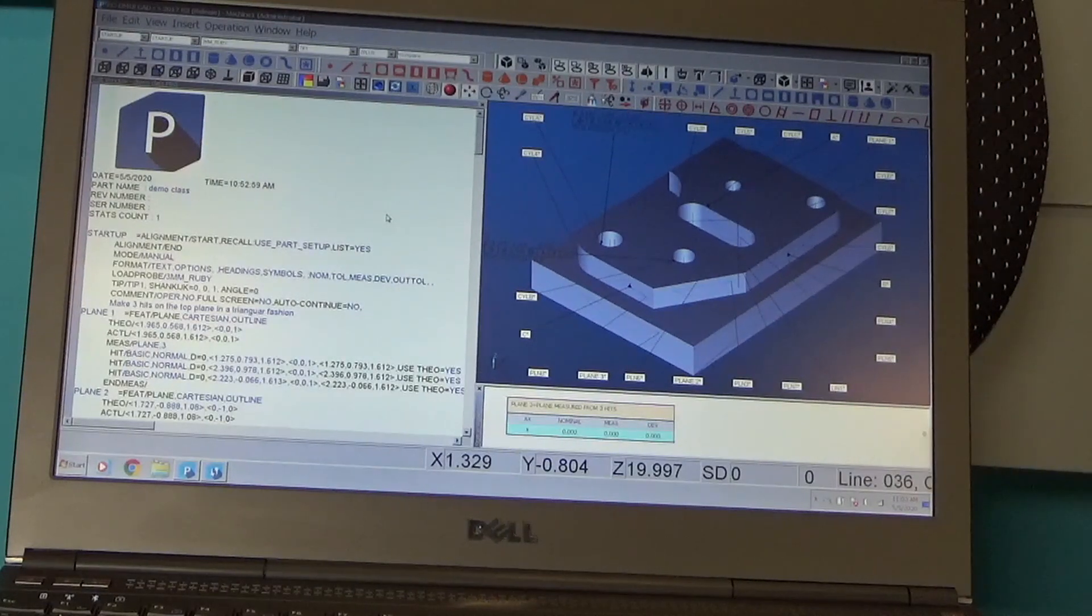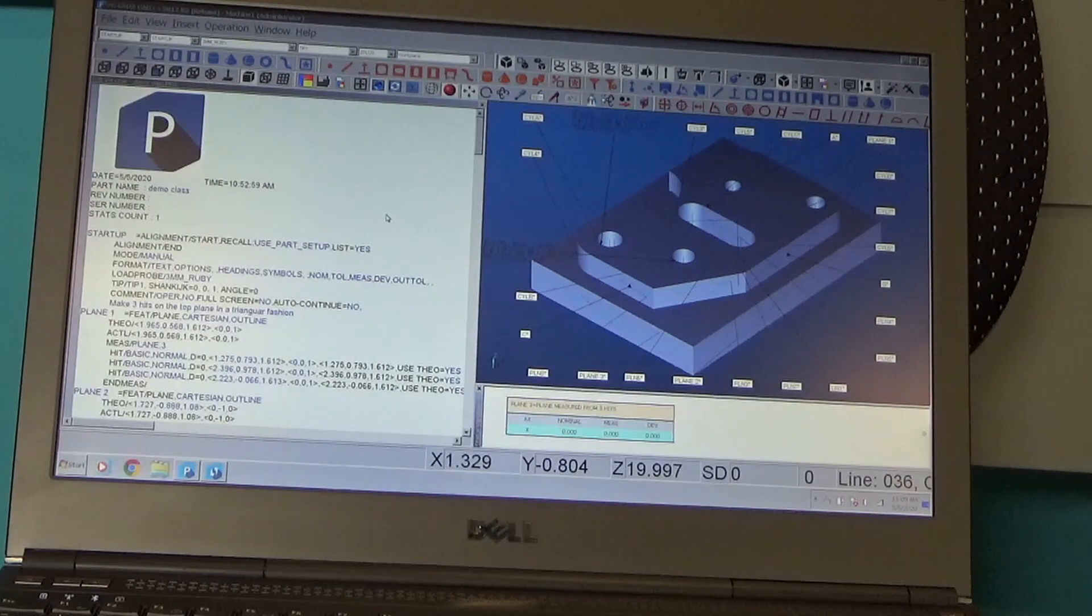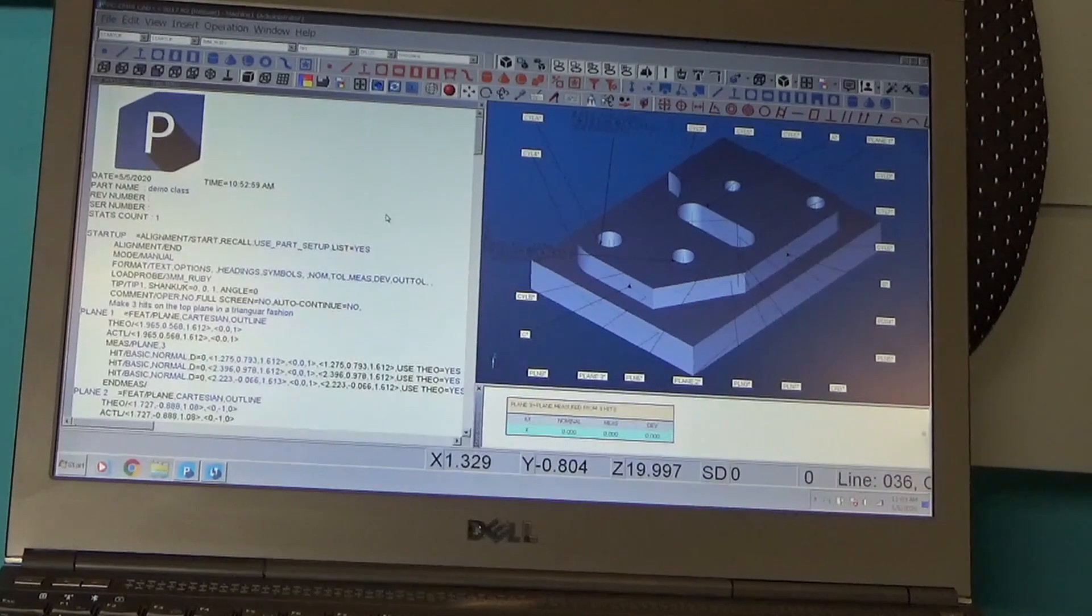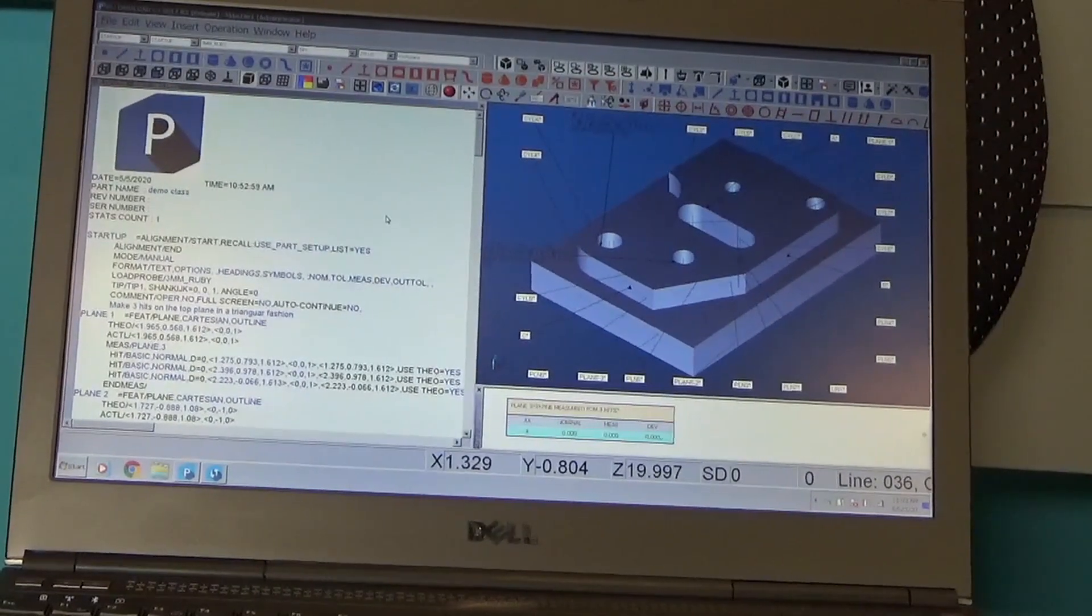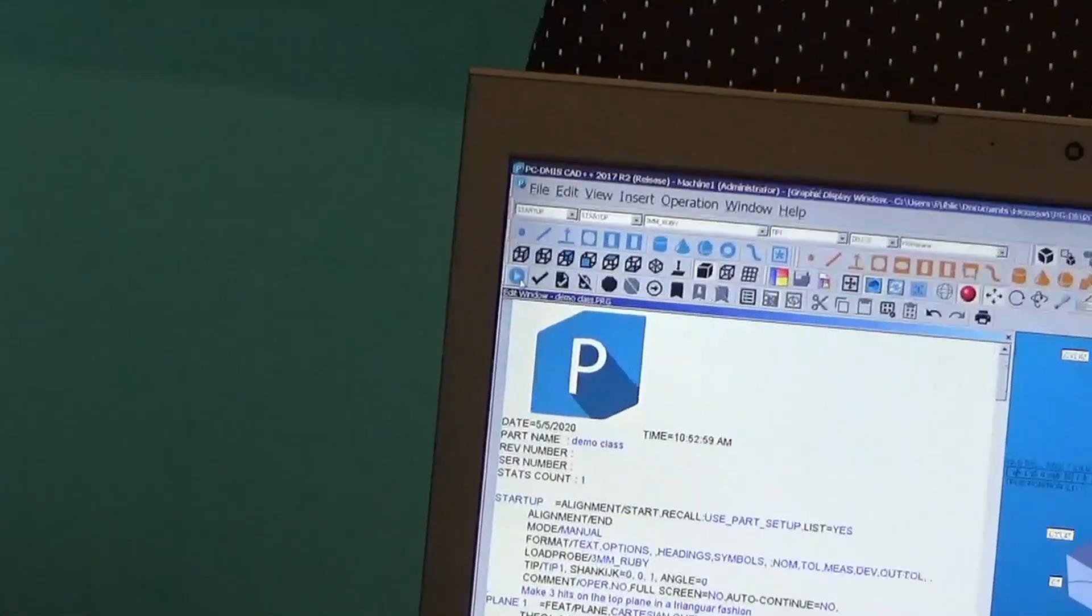What we're looking at here is PC Demus. This is the control software for this. You actually would write a program for this or be an operator that executes this program. You can see in the graphics area we have the CAD model of the design.